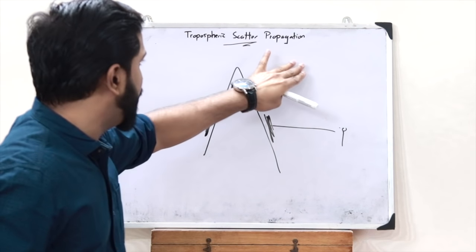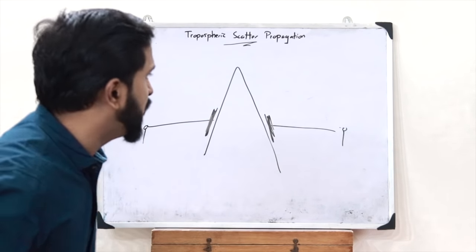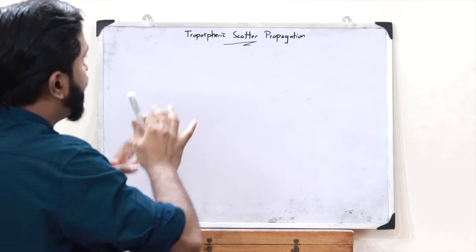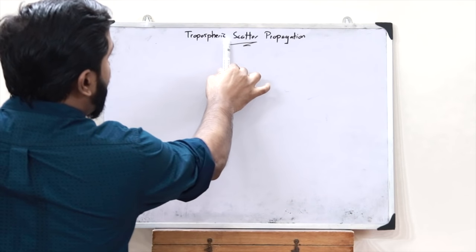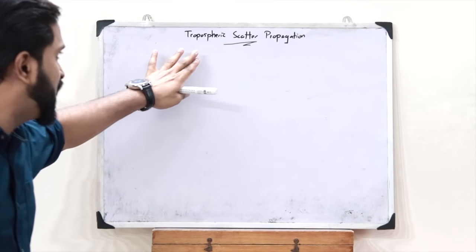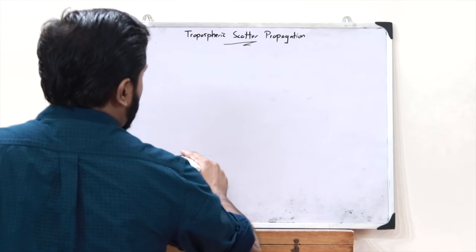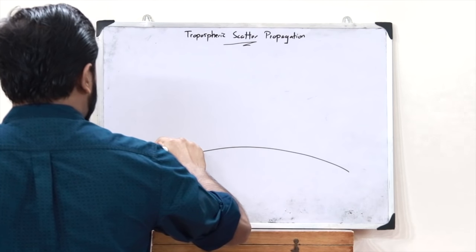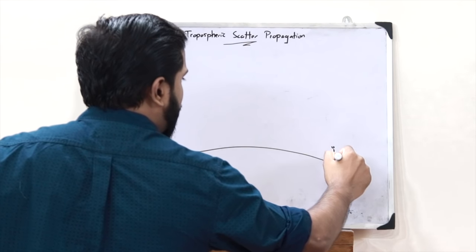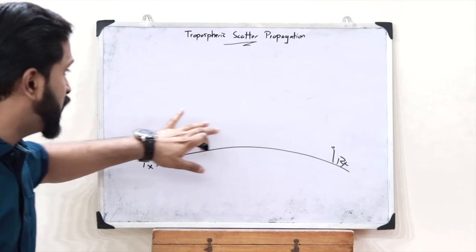Let's give emphasis to all three words: tropospheric, scatter, and propagation. From these three words we understand that this communication system uses the troposphere, involves scattering, and is a kind of electromagnetic radio wave propagation. Now imagine a transmitter antenna on the surface of the earth and a receiver antenna — the intention is for the transmitter to send information to the receiver.